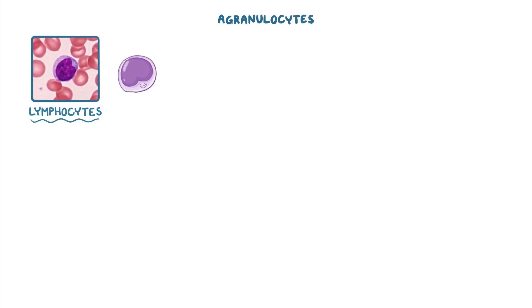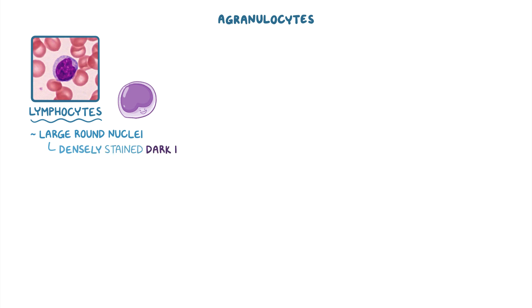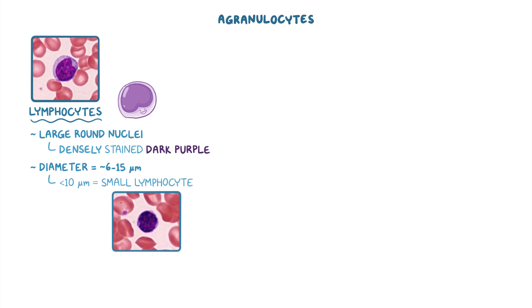Moving on to the agranulocytes. Lymphocytes are round or oval cells that have large round nuclei that are densely stained dark purple. Their diameter can range from 6 micrometers all the way to 15 micrometers. Lymphocytes with a diameter under 10 micrometers are considered small lymphocytes. Smaller lymphocytes only have a very small amount of cytoplasm that forms a small rim surrounding the nucleus, and even though larger lymphocytes have more cytoplasm, their large nuclei still occupy most of the cell's body.